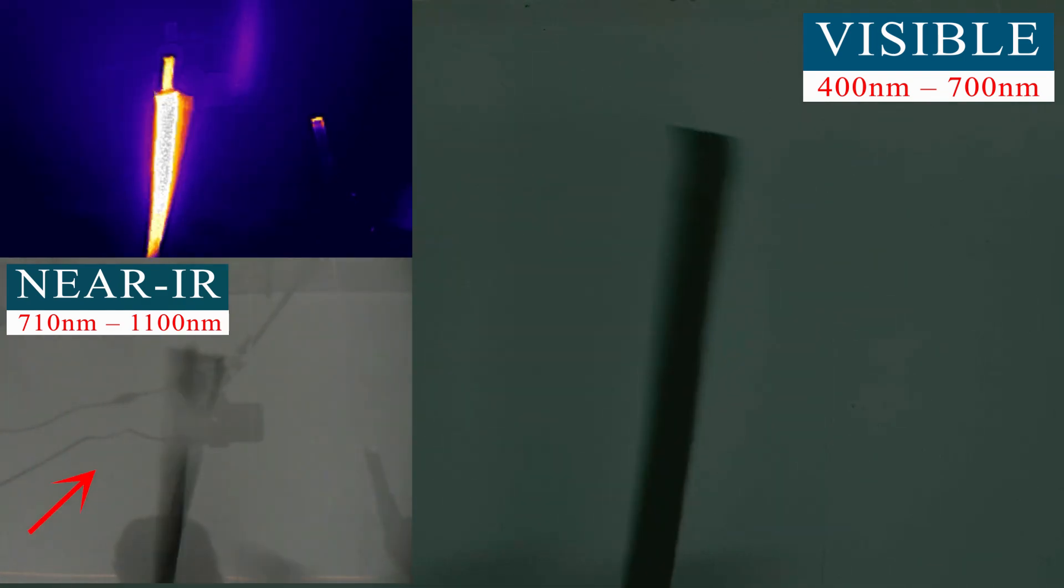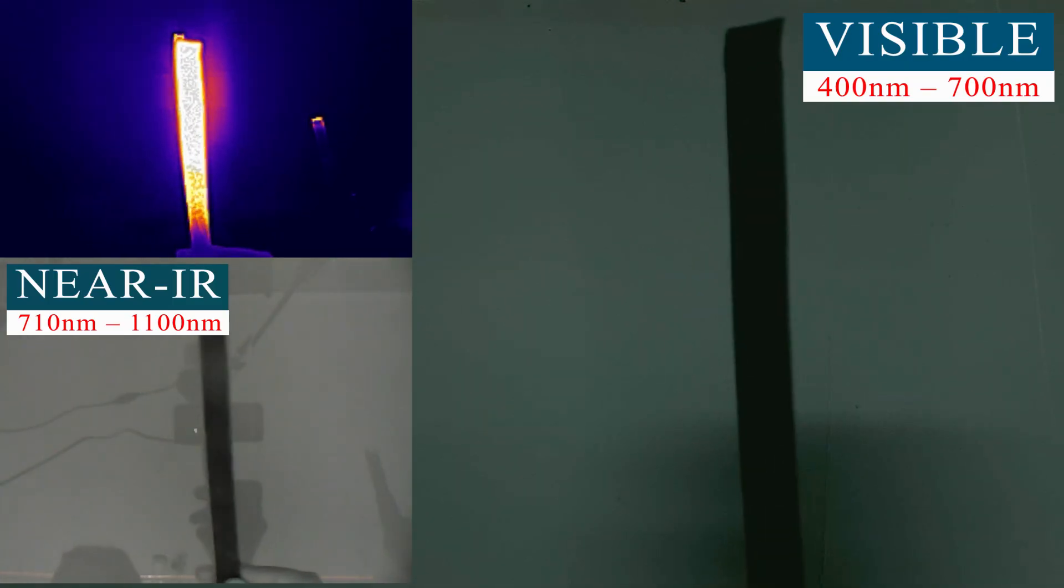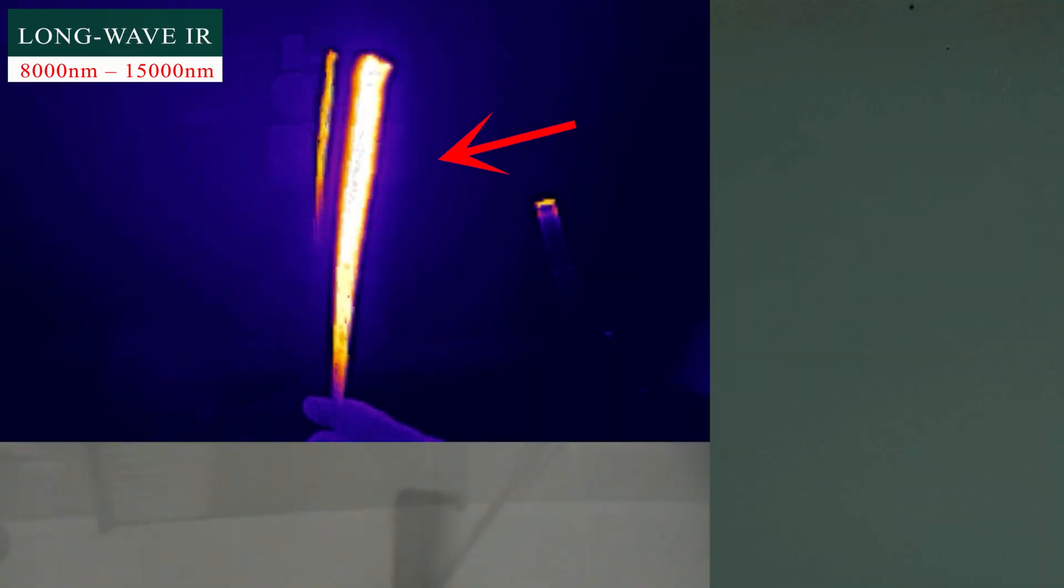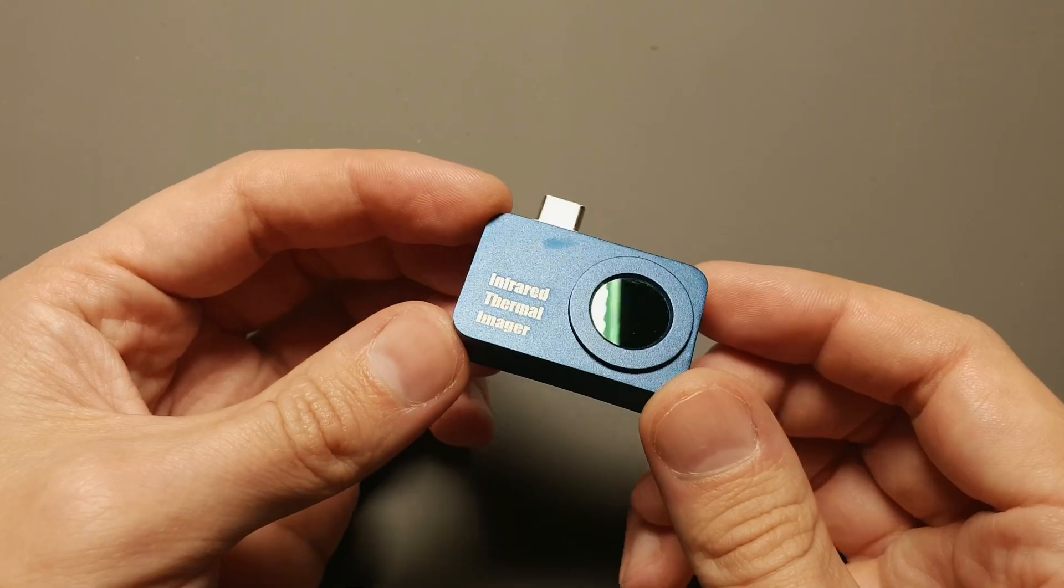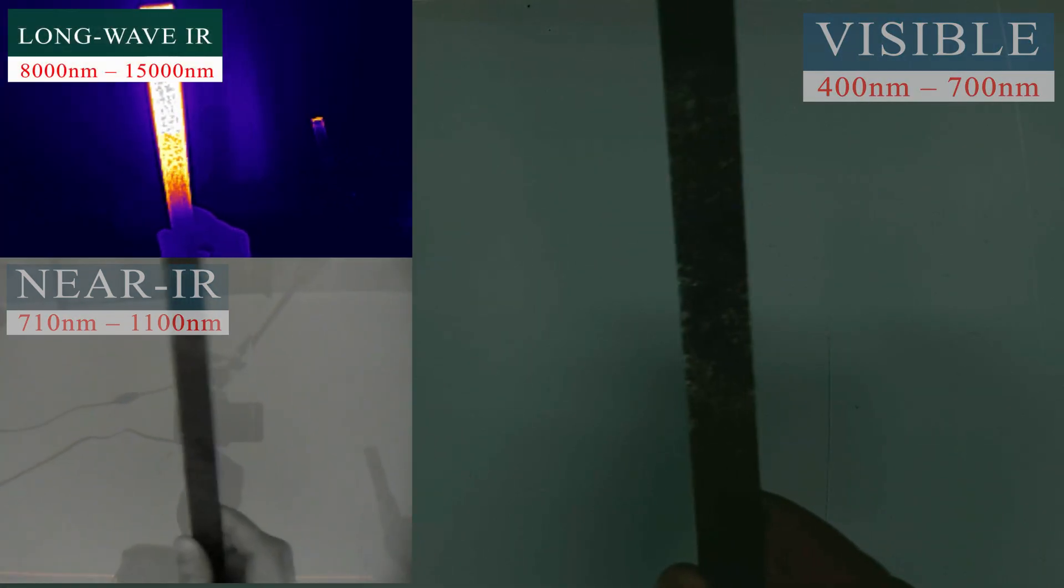But as it cools down even further, even the near-infrared camera won't pick it up anymore. To keep seeing its emission, we need to use a long-wavelength infrared camera, also known as a thermal camera. And here's where it gets really interesting. With a thermal camera, we can see that the metal is still glowing for a very long time.